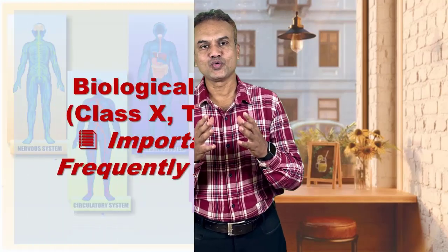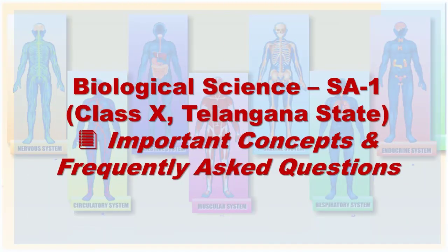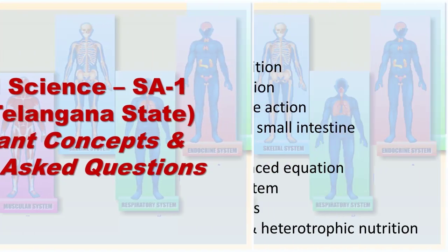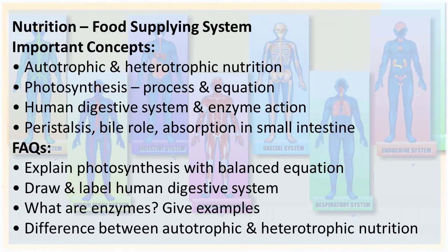Hello friends, let us know important concepts and frequently asked questions from biological science. From the first chapter, Nutrition, the food supplying system — important concepts are autotrophic and heterotrophic nutrition, photosynthesis process and equation, human digestive system, and enzyme action.